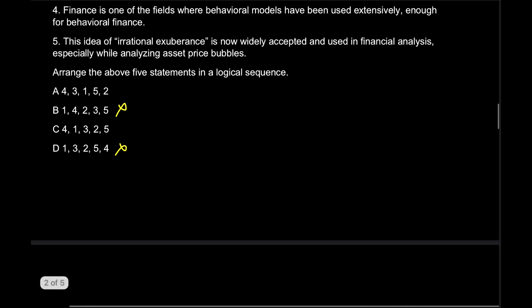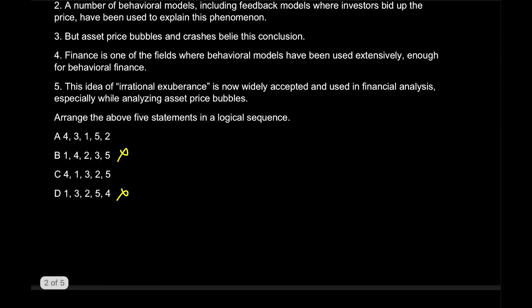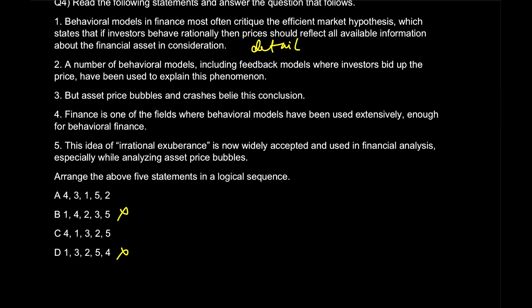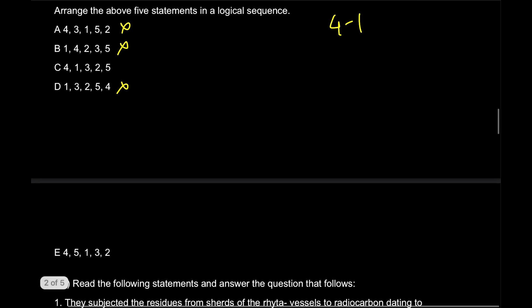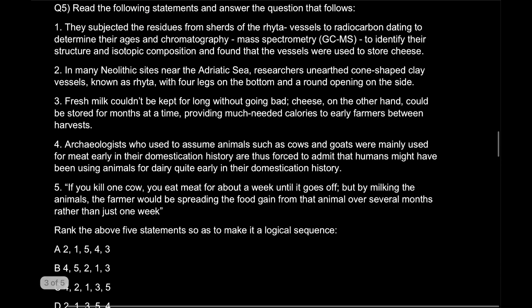Question number four. Again my target number one is to find out the opening sentence here. So I will go for four, one, and four. Four and one decision is easy. 'Finance is one of the fields where behavioral models have been used extensively.' Looks good. 'Behavioral model in finance most often critic' - this is detail. Please pay attention, this is detail. So that eliminates option B, option D from the game. Now I need to find out my second connecting sentence after I'm talking about finance. This is quite understood that if I'm talking about finance, the next thing I'm going to do is talk about in detail behavioral models on finance.